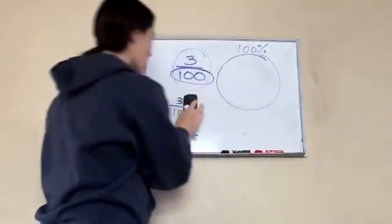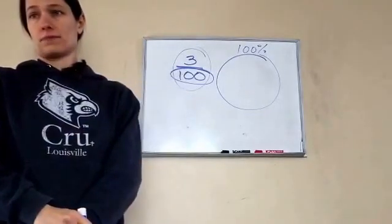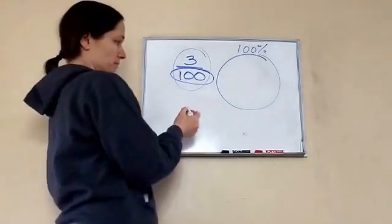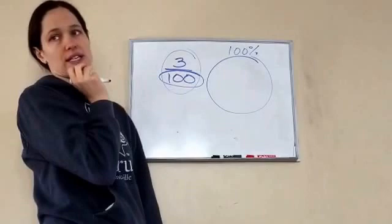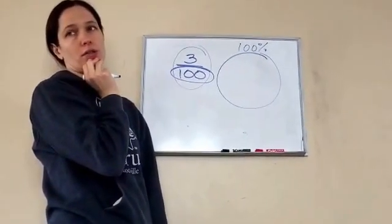So, stay with me. What does 3 tenths look like as a decimal number? No, I'm sorry, I'm sorry. Three hundredths look like as a decimal number. Oh, 0.003? Close.